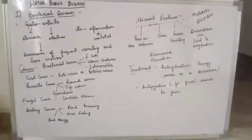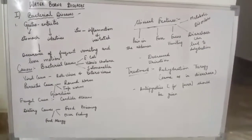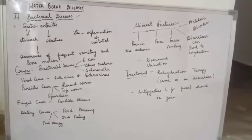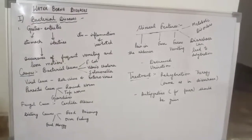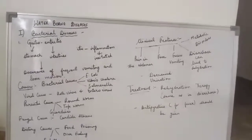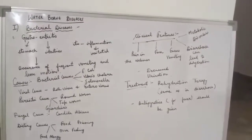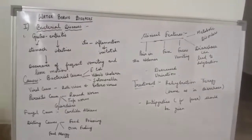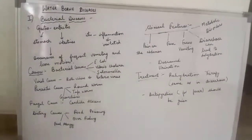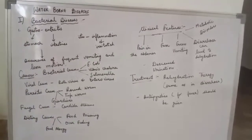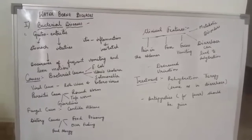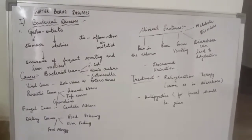Today we are going to start with the next bacterial disease: gastroenteritis, which is the most common bacterial disease. The word 'gastro' means stomach, 'enteritis' refers to intestine, and the suffix 'itis' means inflammation. So gastroenteritis means inflammation of the stomach and intestine.